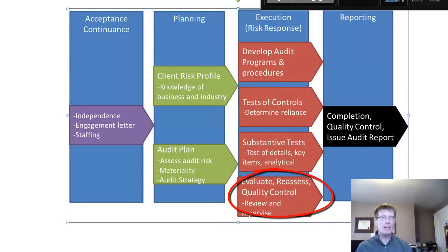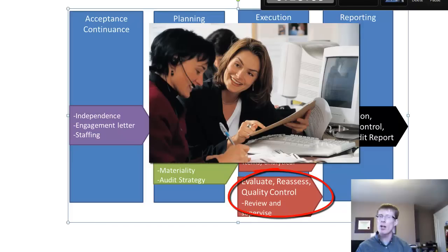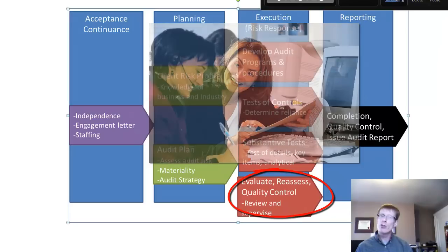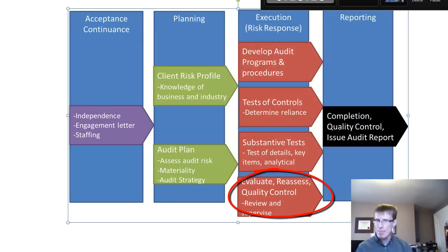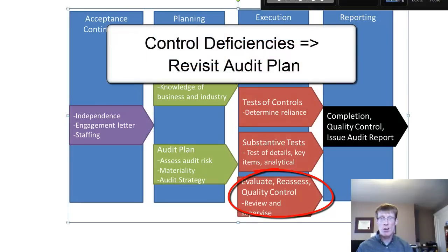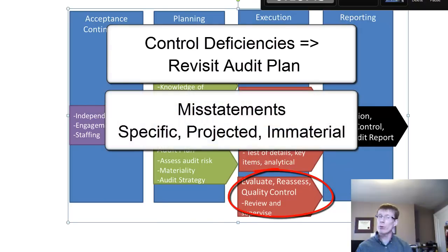In the last step of the execution phase, we evaluate the audit evidence gathered by the field staff. Audit seniors review the work of audit juniors, managers review the work of the audit team, and partners review the entire file. Where evidence supports the risk assessments and the client's version of events, we move on to the reporting phase. However, evidence is often gathered that doesn't support what we expected during planning, resulting in review notes that need to be cleared. It could be that internal controls aren't as effective as we thought, or that certain balances are misstated. These findings require us to go back to the audit plan, reassess audit risk, and modify our procedures. Some errors found require the client to make an adjustment; smaller immaterial errors may be tracked but no adjustment made.